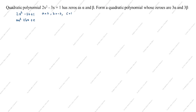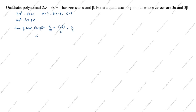What is the sum of zeros? Sum of zeros, alpha plus beta, equals minus b divided by a. Here b is minus 3 and a is 2, so minus of minus 3 divided by 2 equals 3 by 2. Therefore alpha plus beta equals 3 by 2.